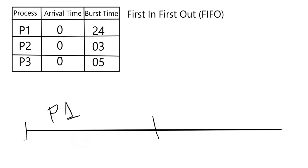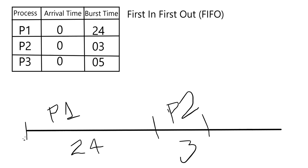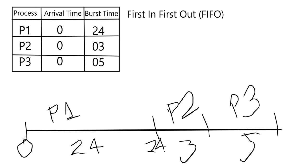P1 takes 24 units of time, so it runs from 0 to 24. Next we have P2, which takes 3 units of time, running from 24 to 27. Finally, P3 takes 5 units of time, finishing at 32. So this is our final Gantt chart: P1 from 0 to 24, P2 from 24 to 27, and P3 from 27 to 32. All processes finish executing at time 32.